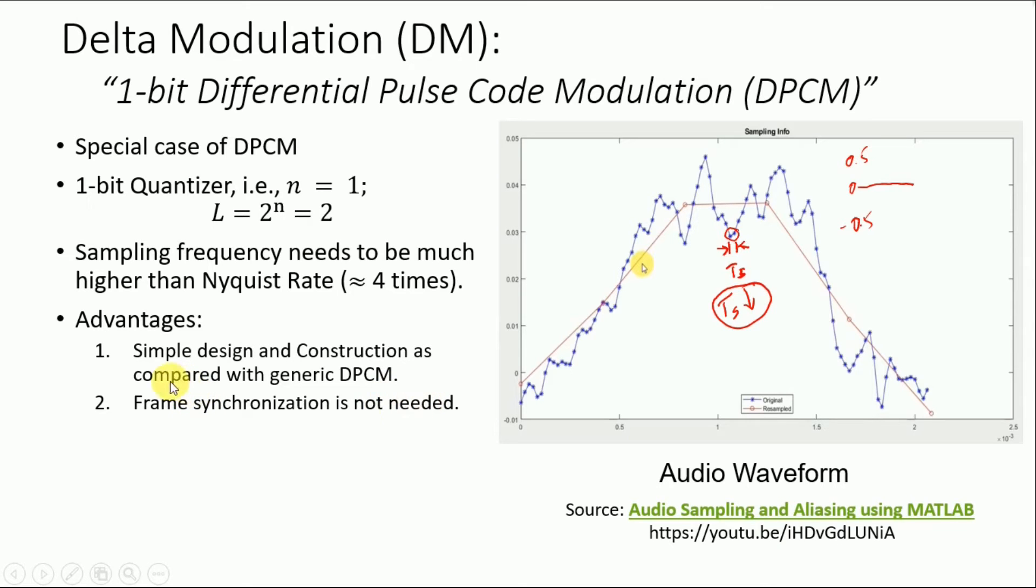So for our Delta modulation we don't need frame synchronization and the most important consideration is that we need fewer number of bits for encoding a given message. And this is the most important aspect because if we have fewer number of bits, that means in time domain we are sending less number of samples.